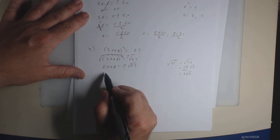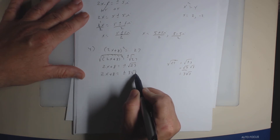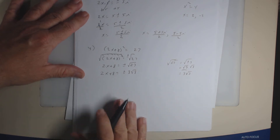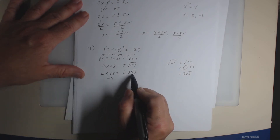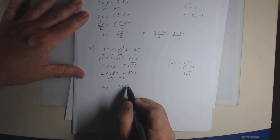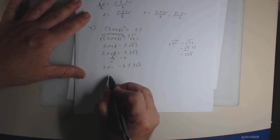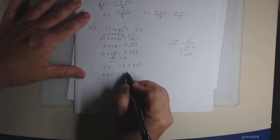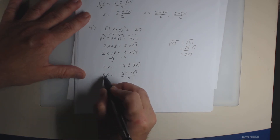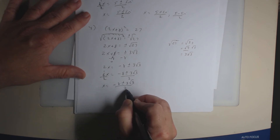So I get 2x plus 8 equal plus or minus 3 square root of 3. Subtract 8 from both sides, then divide both sides by 2. So x equals (negative 8 plus or minus 3 square root of 3) all over 2. That's your answer.